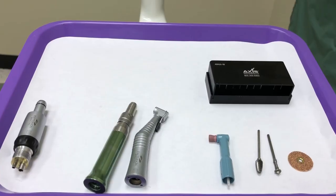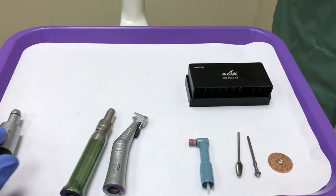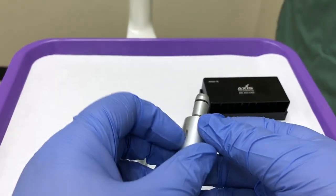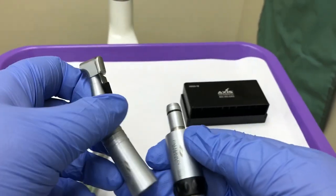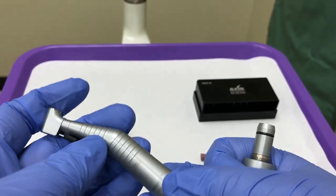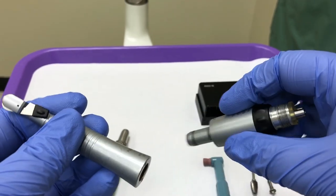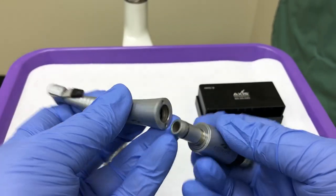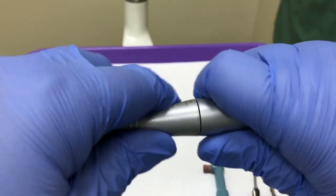There are several different ways to assemble your low-speed handpieces. For the first example, we're going to attach our contra angle. This is a quick connect adapter. You simply push the two pieces together and it will click into place.